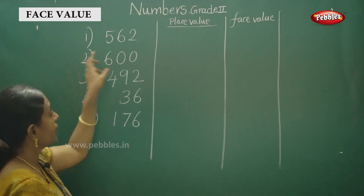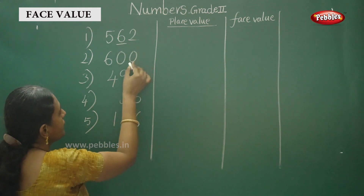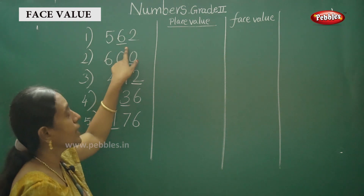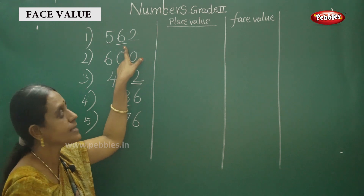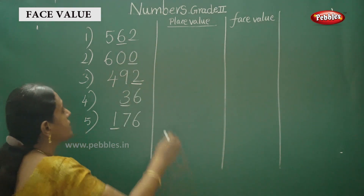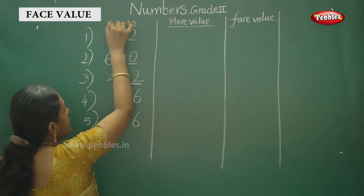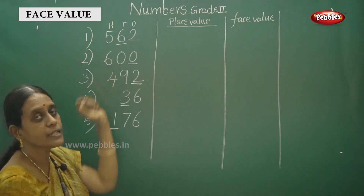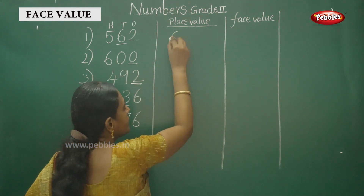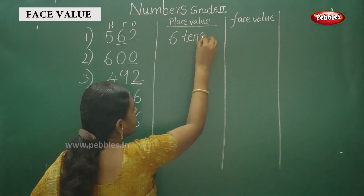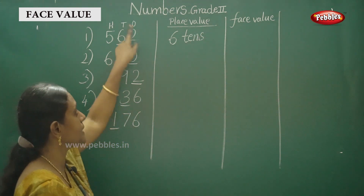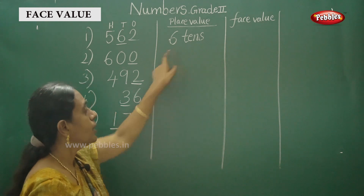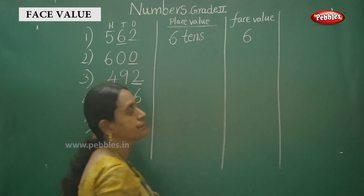Okay, three-digit number — so 562. Find the place value of underlined digits. What is 6? So that place value — first, the answer. What is the place value? Ones, tens, hundreds — once, tens, hundreds. Six is in the tens place. What is the number? Six tens — you have to write six tens. Four place value and face value — you have to write the number itself. That is face value.